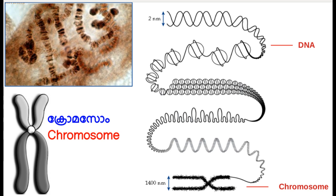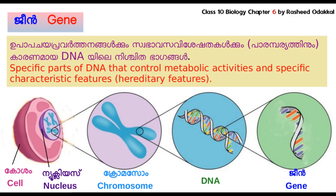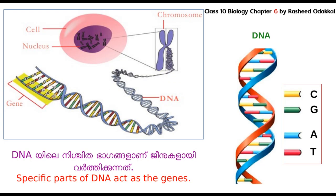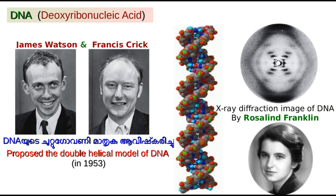Genes are the specific nucleotides of DNA that control metabolic activities and are responsible for specific characteristic features of any organism through synthesizing proteins. The double helical structure model of DNA proposed by James Watson and Francis Crick shed light on the different types of nucleotides.